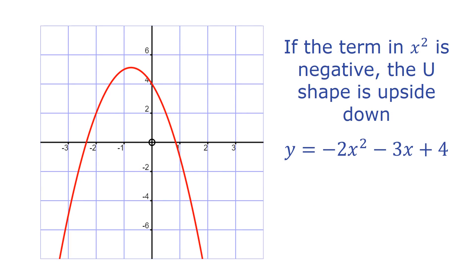If the term in x squared is negative, the u shape is upside down. The curve is still symmetrical.